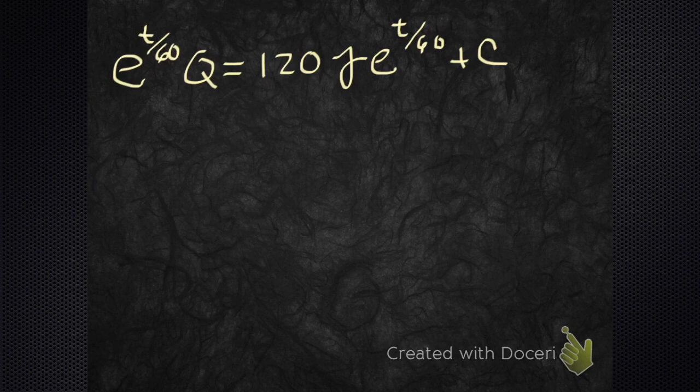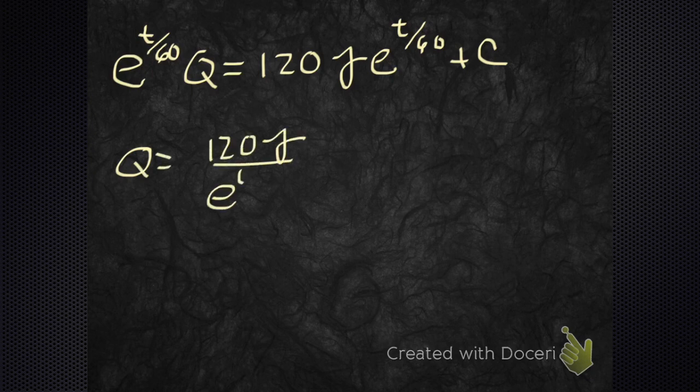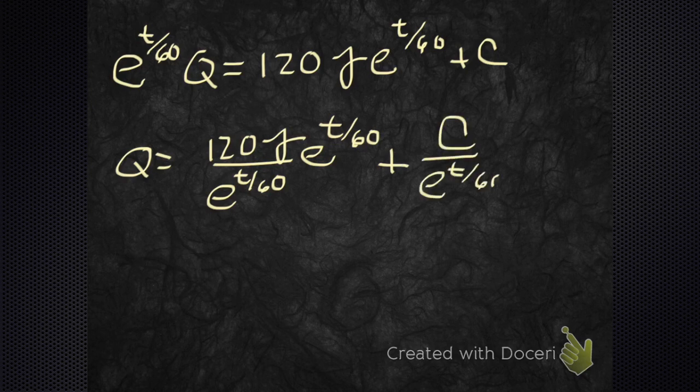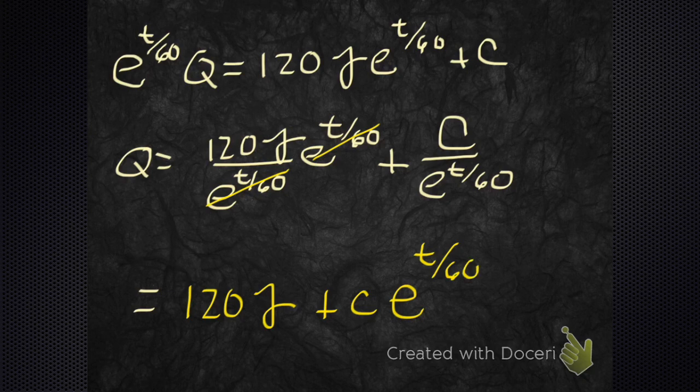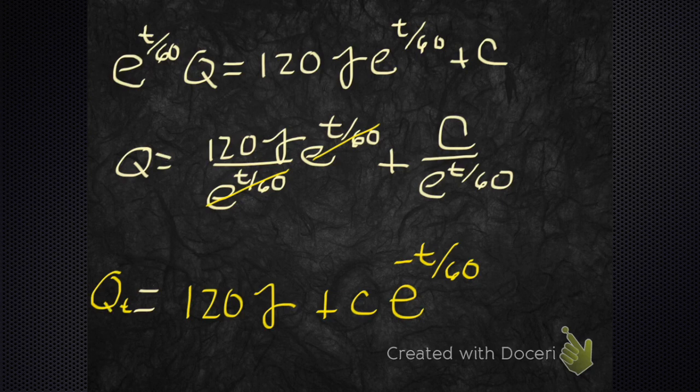Now what? We need to solve for Q, dividing everything by e to the t over 60. I'm going to get some reductions - the e's to the t's goes, and we rewrite that with a negative exponent. And what did you just find? You found Q(t).